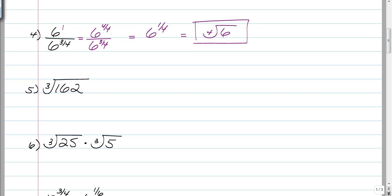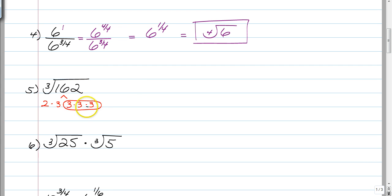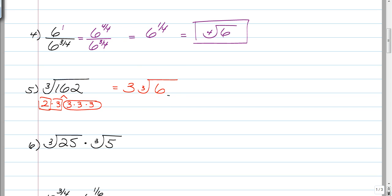Number 5: the cube root of 162. You can break it down using the factor tree. If you use the factor tree, you'd end up with a 2, a 3, a 3, a 3, and another 3. Since this is a cube root, you circle a triple of 3's. So we have 3 outside, and then the cube root of what's left over — a 2 and a 3 — which is 6. So the answer is 3 cube root of 6, and you are done.